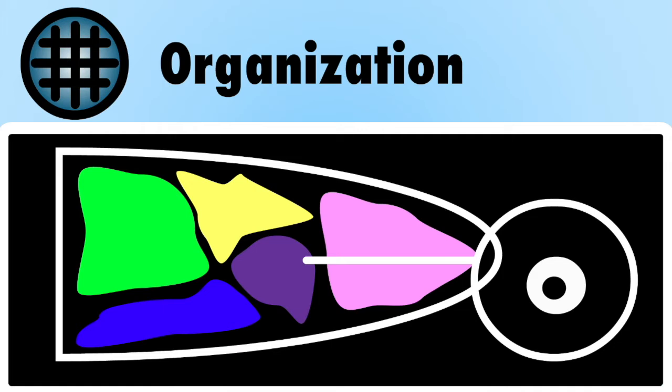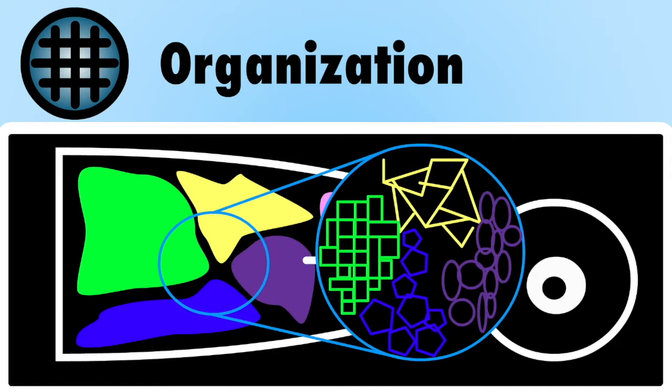You are made out of tissues, which are made out of cells. And as a result, the cells in your body are arranged in an organized manner.